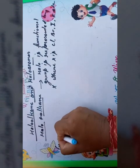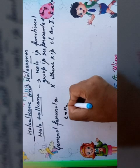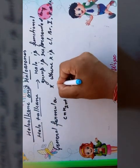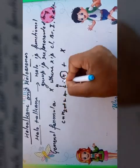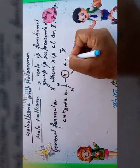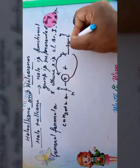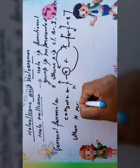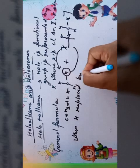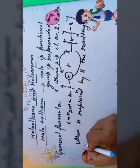The general formula of alkanes is CₙH₂ₙ₊₂. For example, methane. When one hydrogen atom is replaced by X, the resulting compounds are haloalkanes.